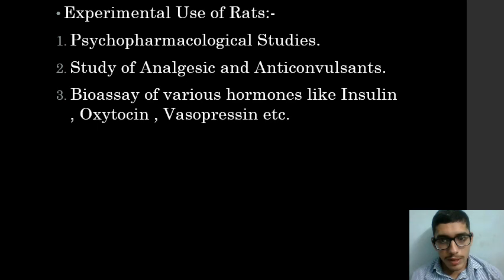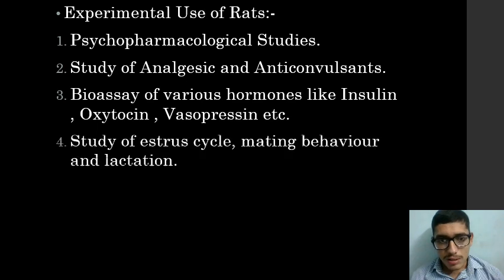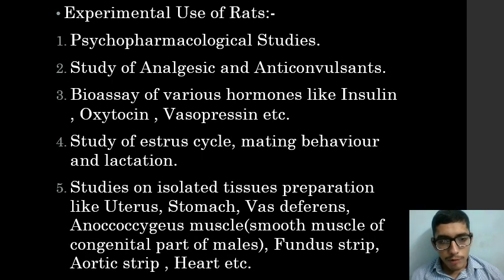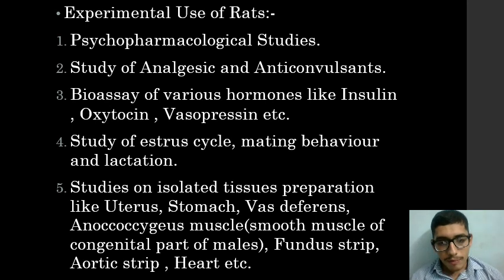Further experimental uses of rats include: bioassay of various hormones like insulin, oxytocin, and vasopressin; study of the estrus cycle, mating behavior, and lactation; and study on isolated tissue preparations such as uterus, stomach, vas deferens, oesophagus muscles, smooth muscles of the urogenital part of males, fundus strips, aortic strips, and heart.